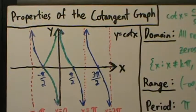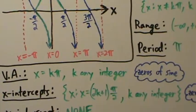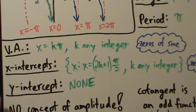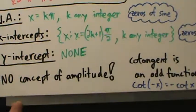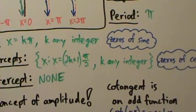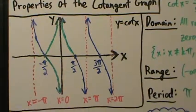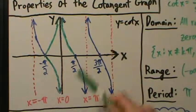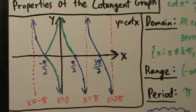So that's the properties of the cotangent graph: domain, range, period, vertical asymptotes, x-intercepts, no y-intercept, no concept of amplitude, phase shift is best replaced by horizontal shift, and cotangent is an odd function — meaning it's symmetric over the origin. Reflect over y, then over x, and you get a piece of the graph back.